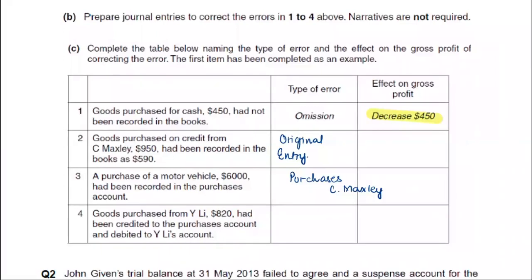We have $590. The difference works out: 590, then 700 is $110 difference; then 800 is $210; then 900 is $310; so $360 is the difference. So $360 — we will debit it in purchases and credit C-Max. When purchases are debited by $360, that means our expenses increase.